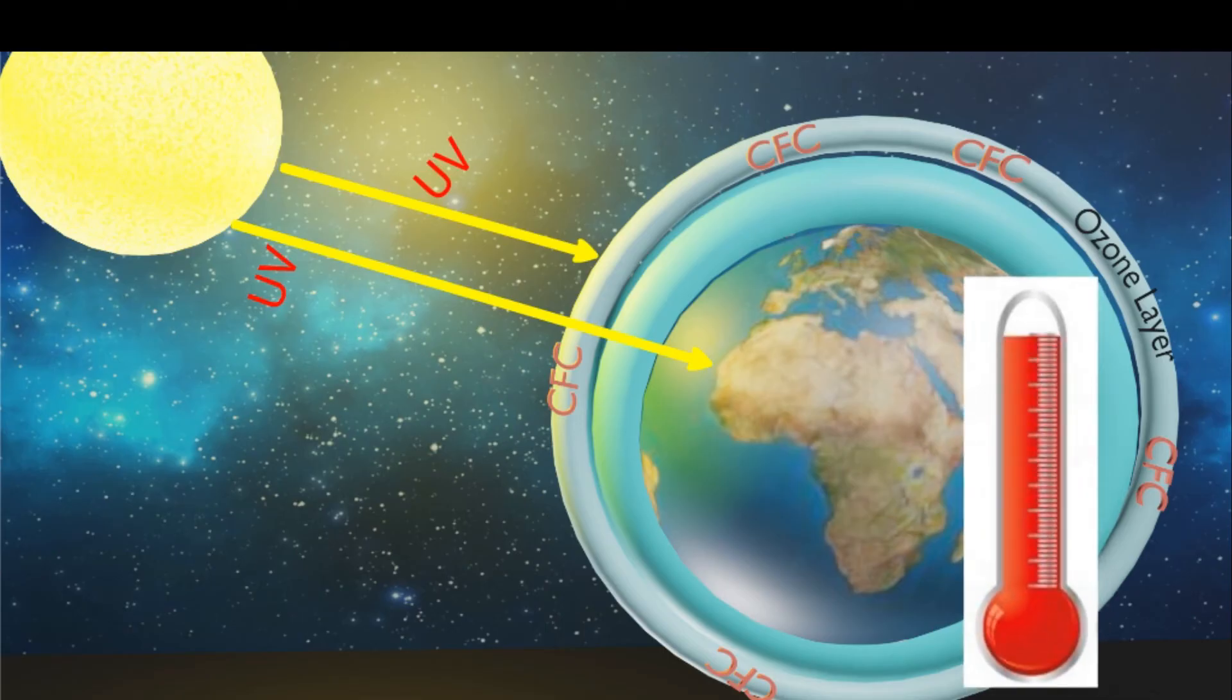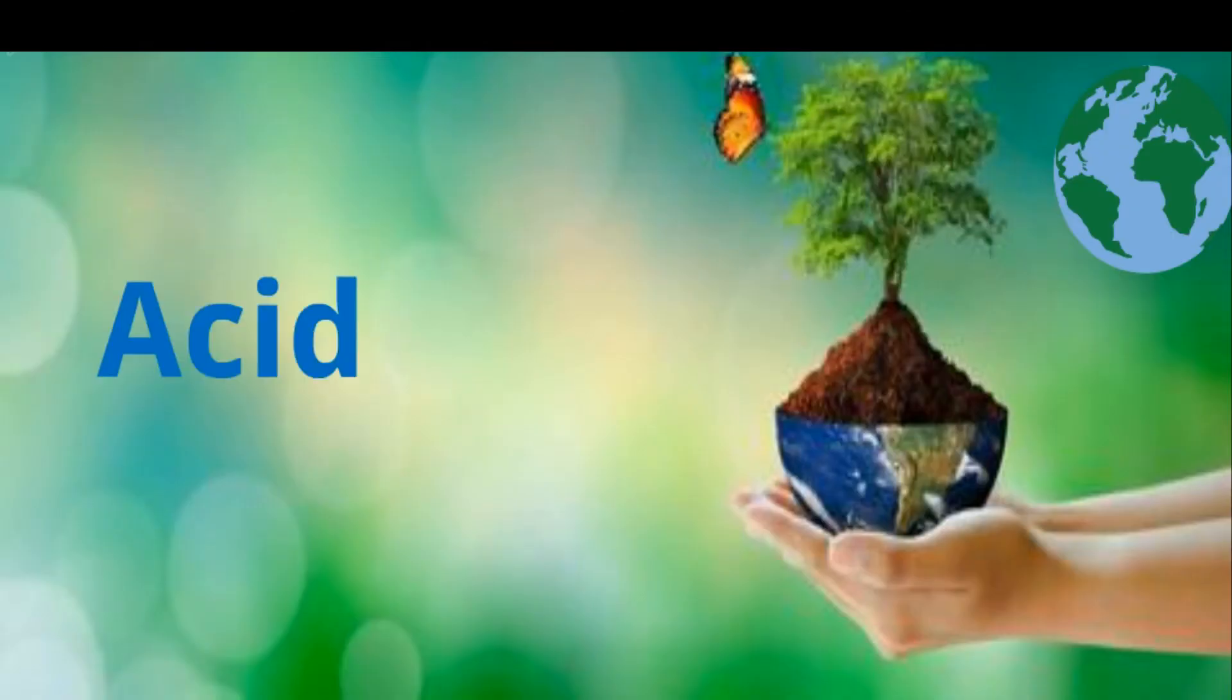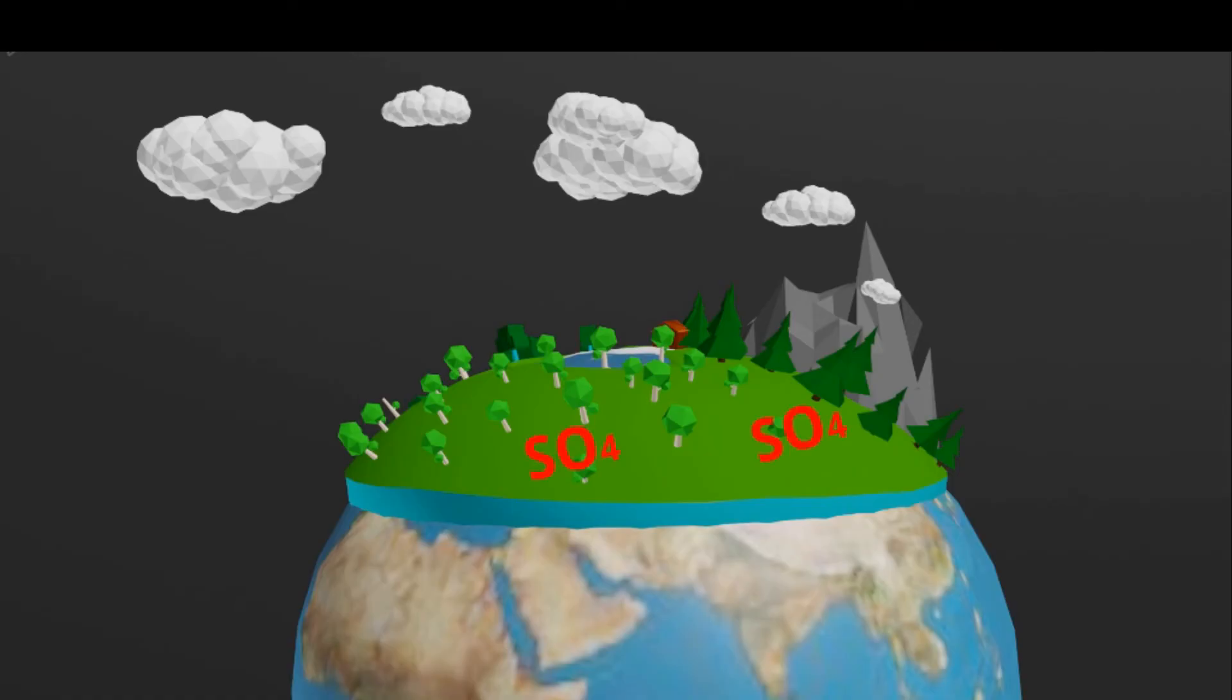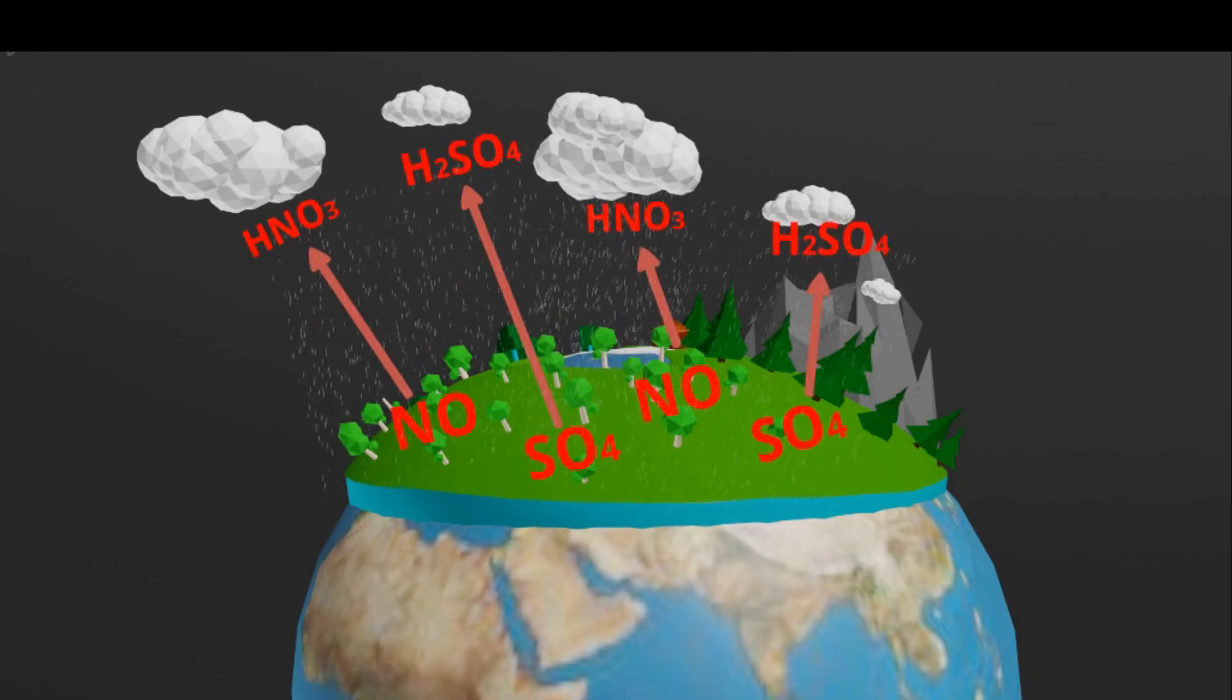Sulfur dioxide and oxides of nitrogen are present in the atmosphere as air pollutants. They get dissolved in water vapors in clouds and turn into acids like sulfuric acid and nitric acid. These acids make the rainwater acidic. This acidic rain affects animals, plants, and buildings.